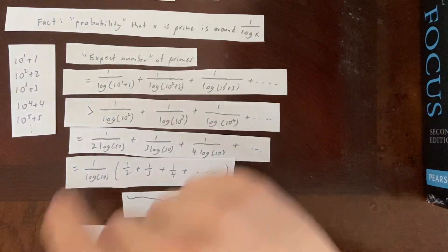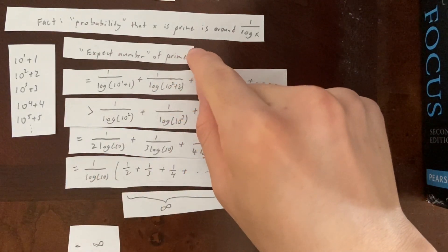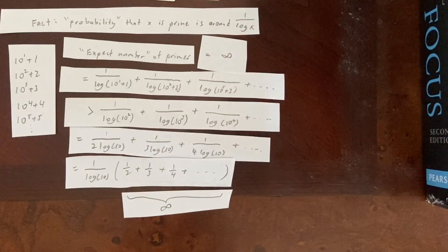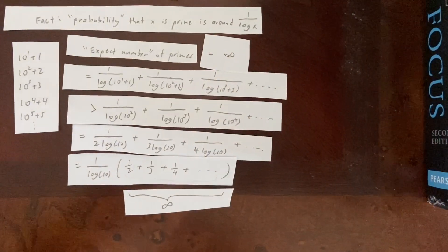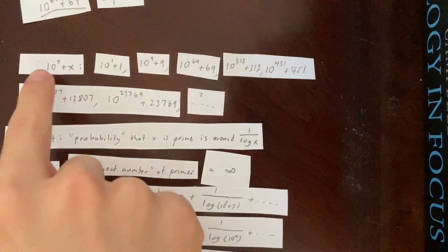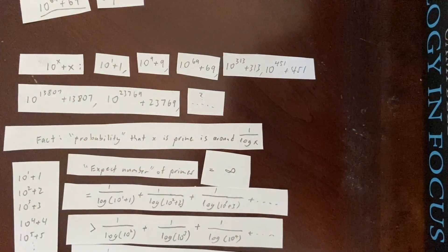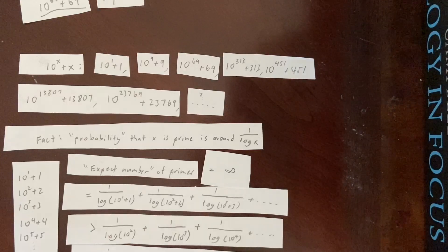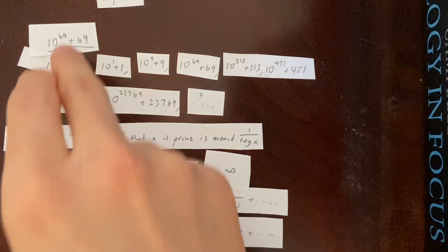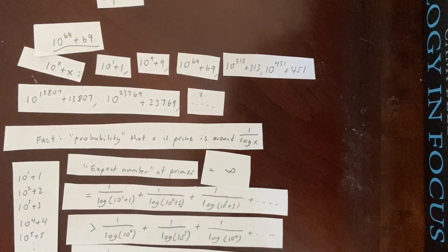All right, so we just found that the expected number of primes should be equal to infinity. So we would expect that there are infinitely many primes of this form. But we haven't proven that yet. And this prime number is going to be my mega fave number.